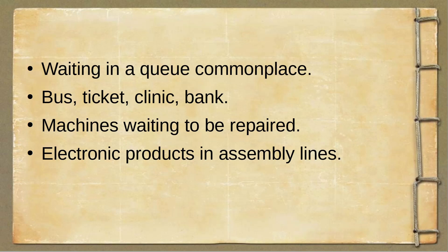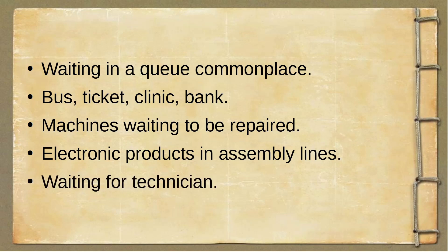Similarly, in an assembly line, electronic products go from one place to another place where assembling is being done. These electronic products can also be considered to be in a queue because they have to go from one place to another where they are further worked upon and finally you get the finished product. When waiting for a technician - if there is one service agent who has to visit five or six people in an area and repair their laptops, the customers waiting for their laptops to be repaired are also in a queue.